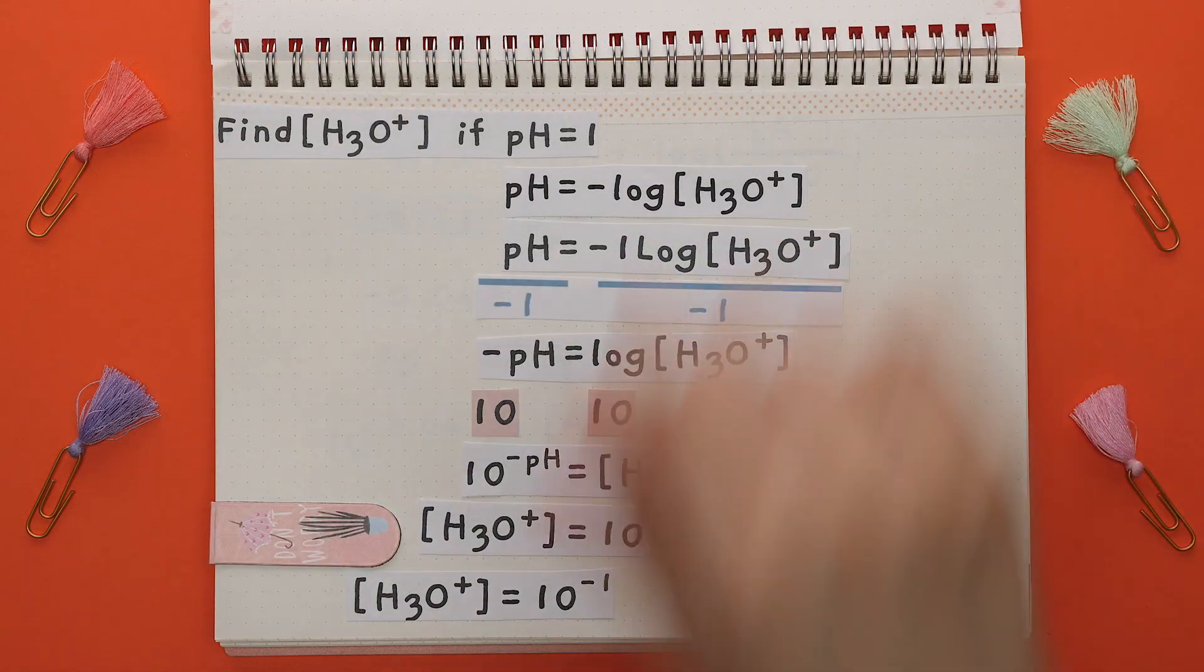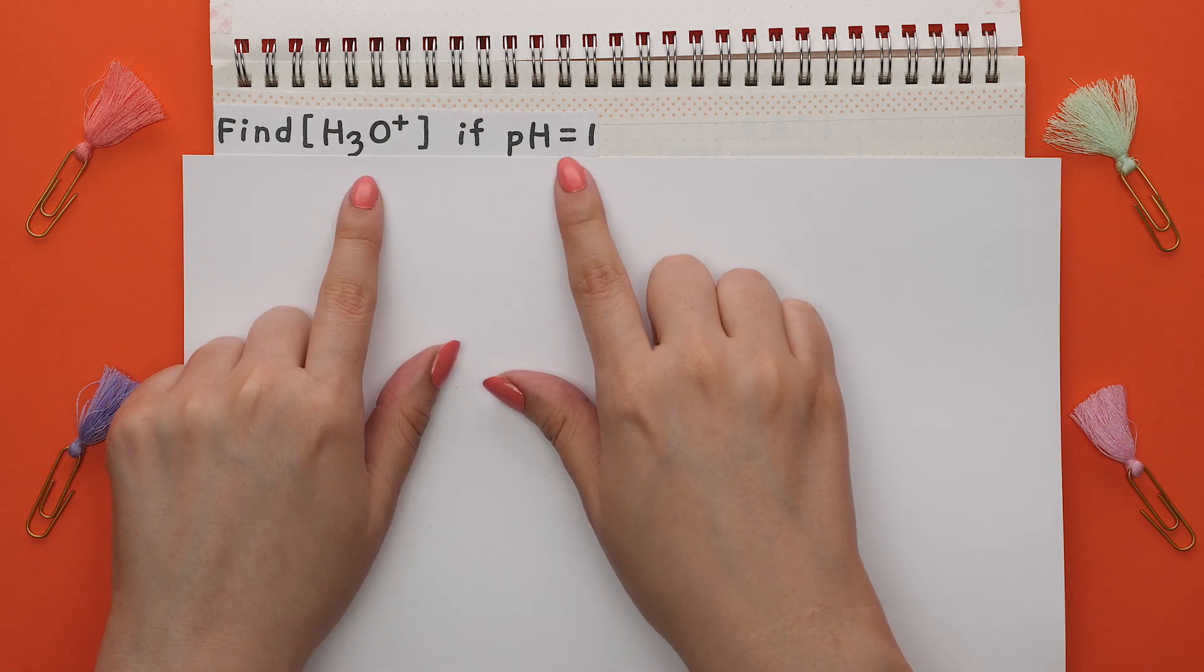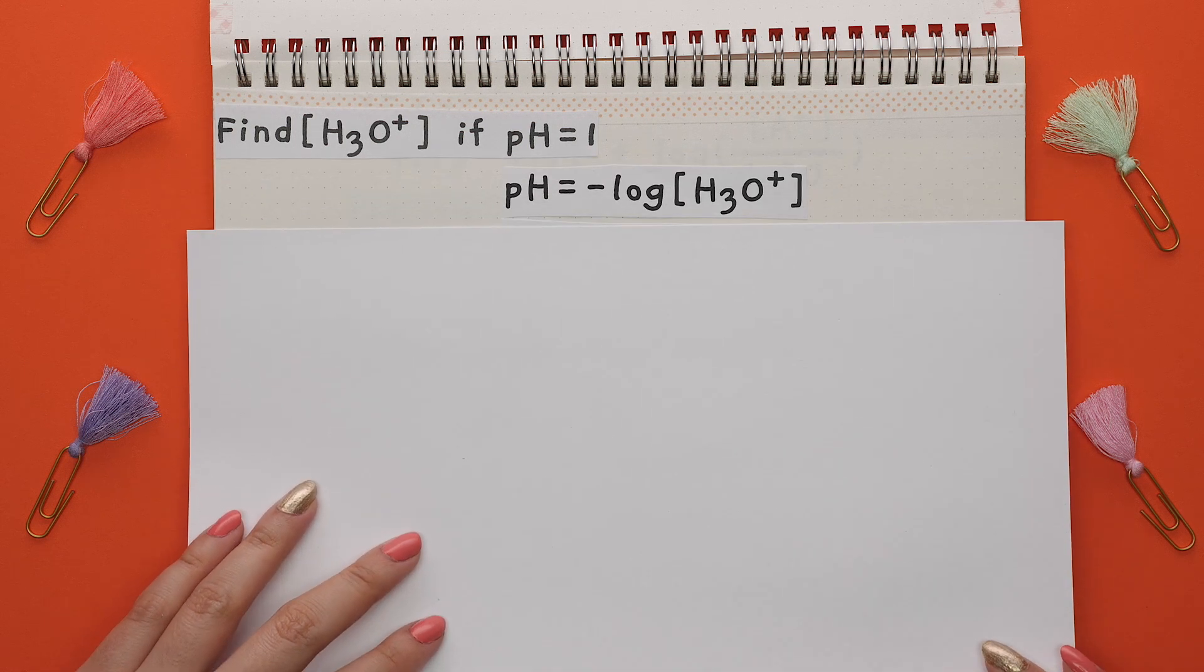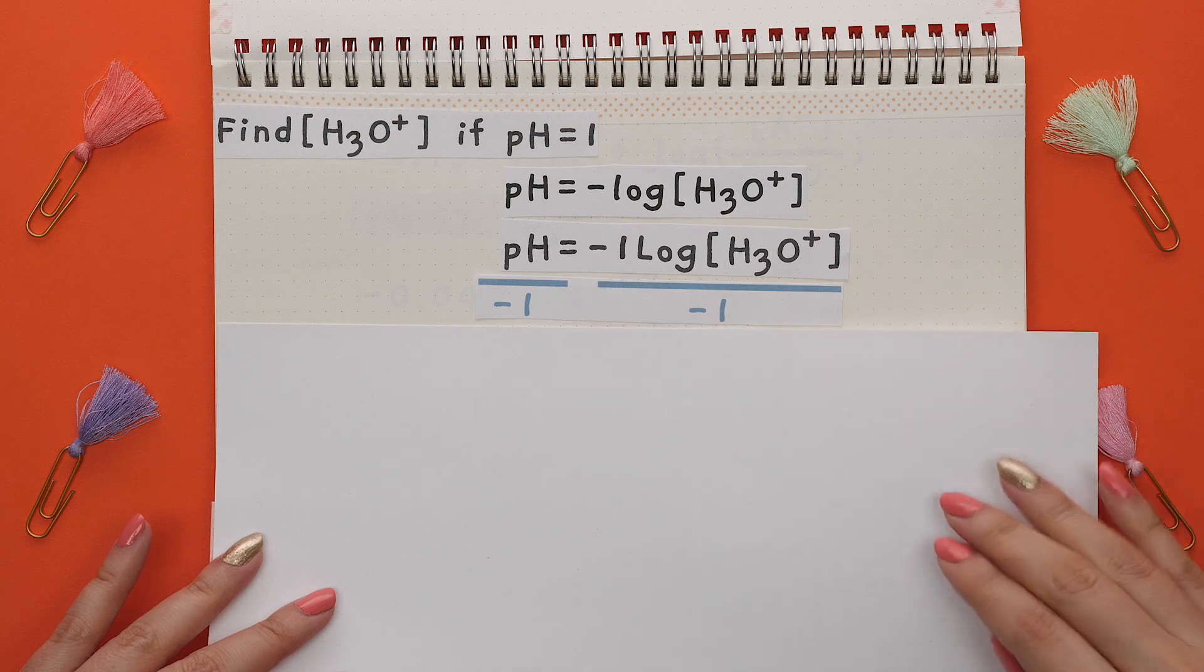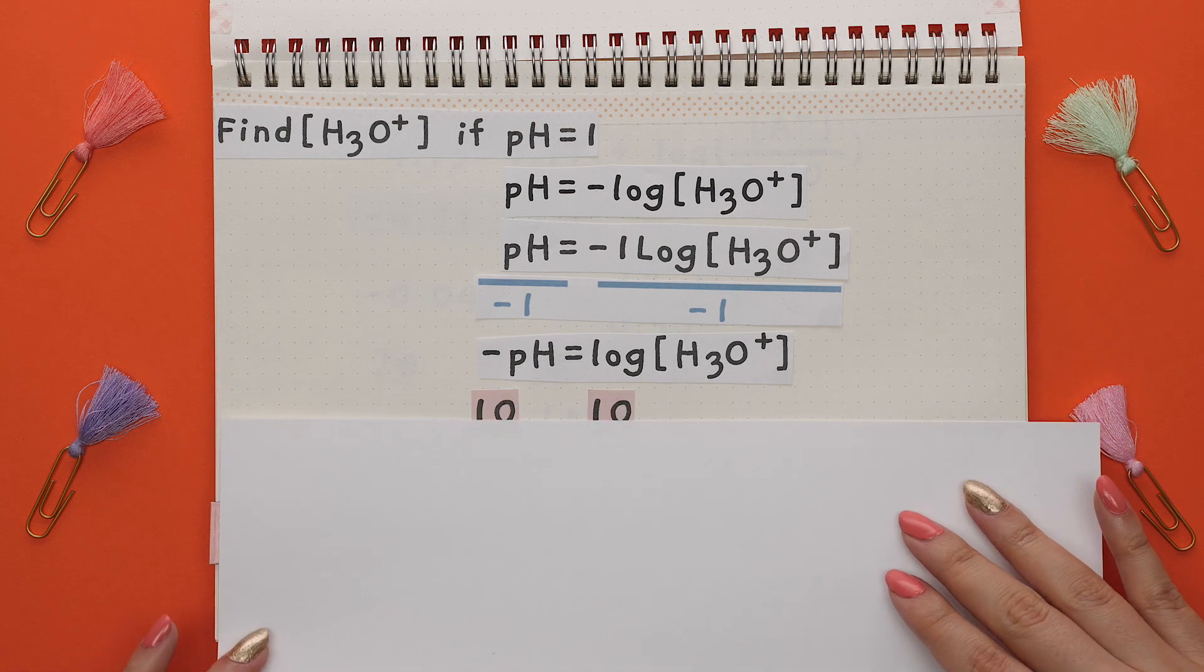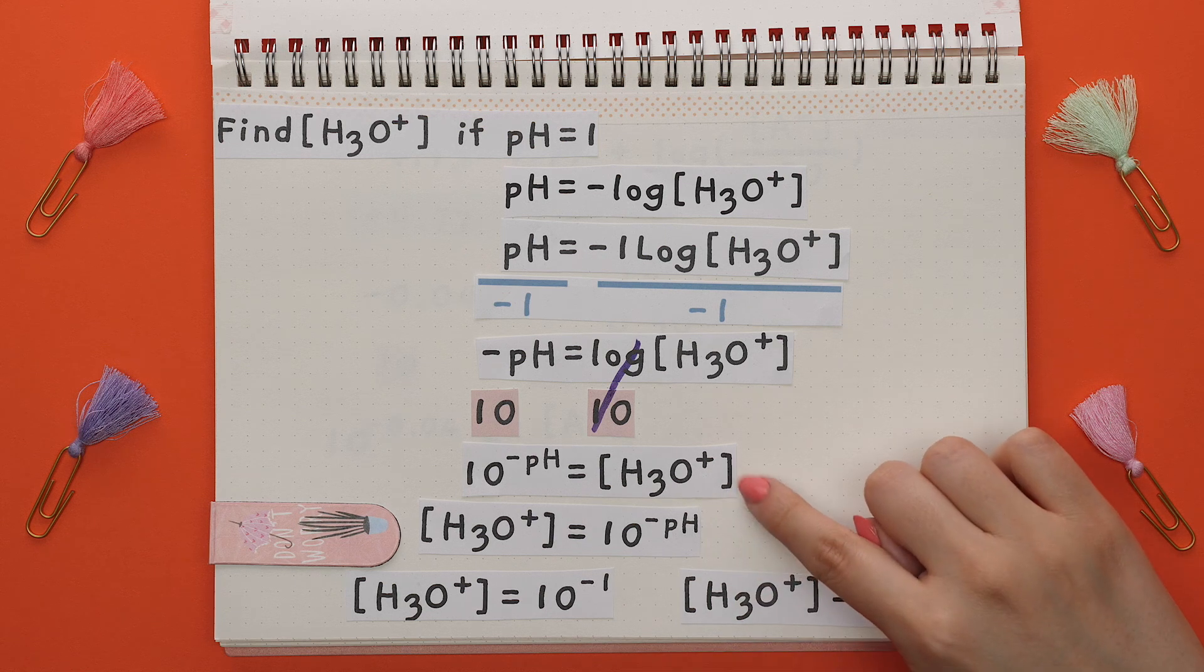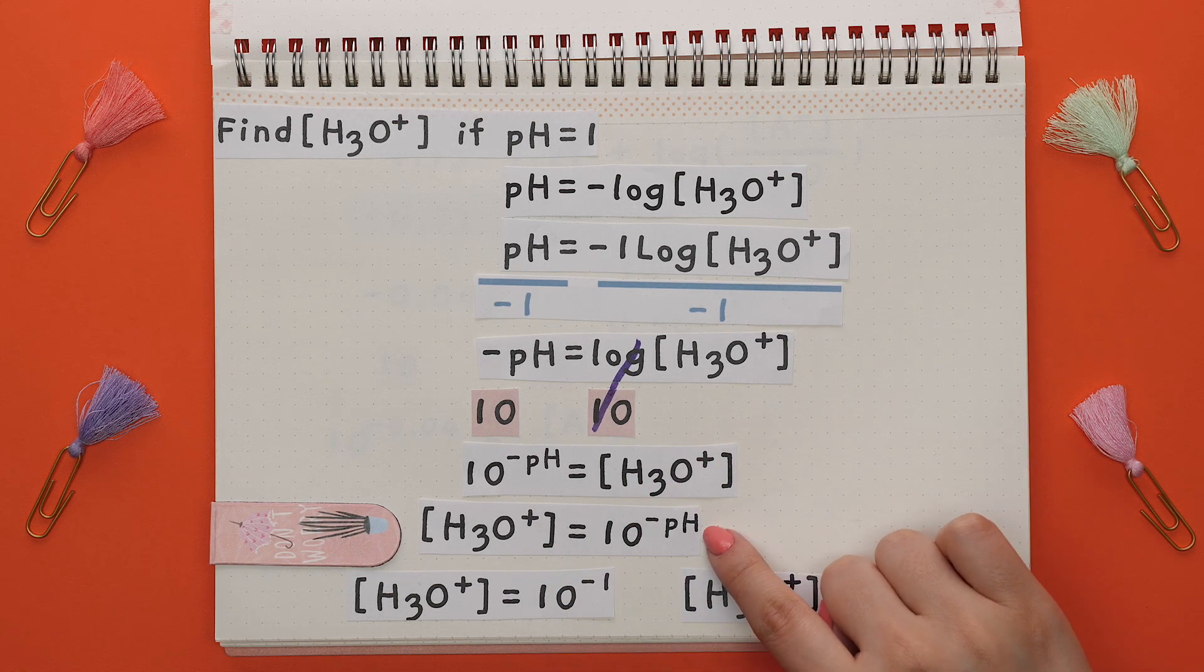Let's try this with pH. If we wanted to find the acid concentration and were given the pH, here's what we do. Using the pH formula, start with dividing over the negative 1 in front here to both sides. Now we can take the anti-log of both sides, the log and base 10 cancel out, and we can rewrite this as the acid concentration is equal to 10 raised to the negative pH.